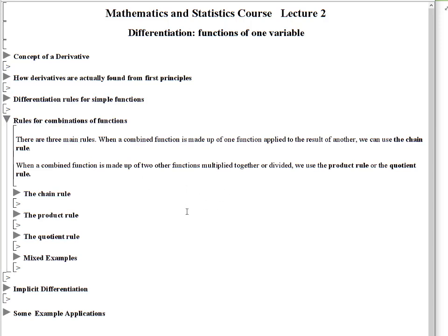There's three main rules. One rule is for when you have a combined function made up of one function applied to another, and the other two rules are about where functions are multiplied or divided. So there's the chain rule, the product rule, and the quotient rule, and finally some mixed examples.